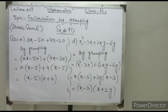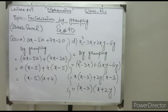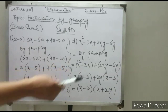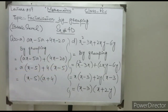Similarly in part D we have four terms: x² minus 3x plus 2xy minus 6y. By grouping: first group is x² minus 3x, second group is 2xy minus 6y. In the first group, x is common, leaving x minus 3.